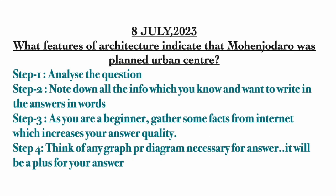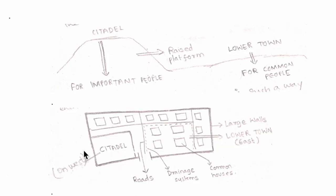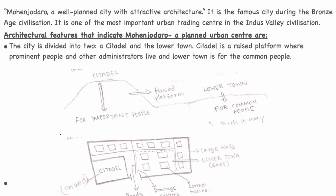I have gathered some information for the answer and drew two diagrams to describe the architectural features of Mohenjo-daro. I have started the answer with the phrase: 'Mohenjo-daro — a well-planned city with attractive architecture.'